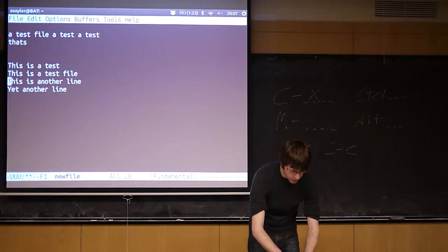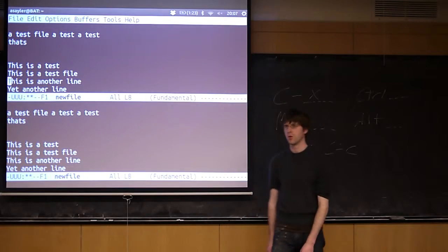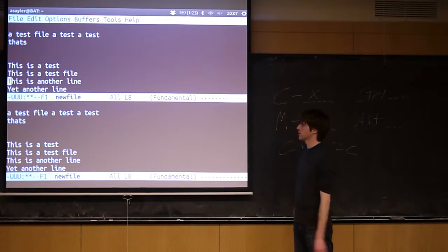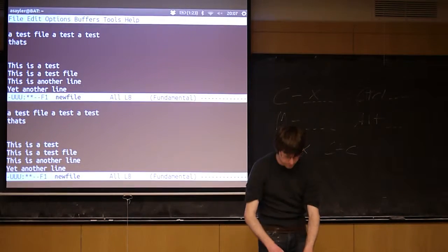If I want to do a horizontal split, it's ctrl x 2. So 3 is a vertical split, 2 is a horizontal split. You'll see now it splits top and bottom. This is also repeatable.